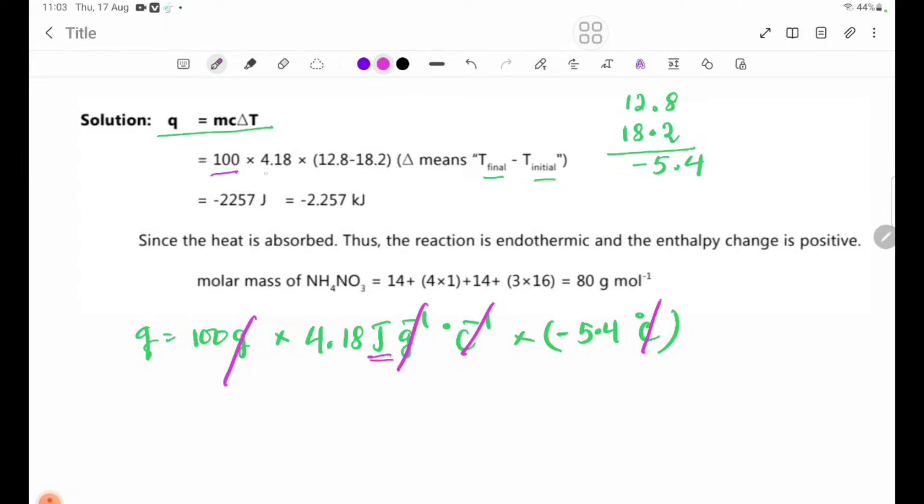Q equals 100 times 4.18 times minus 5.4, which equals minus 2257 joules, or minus 2.257 kilojoules.